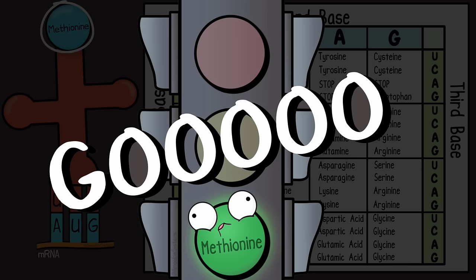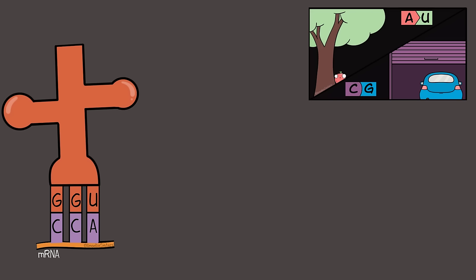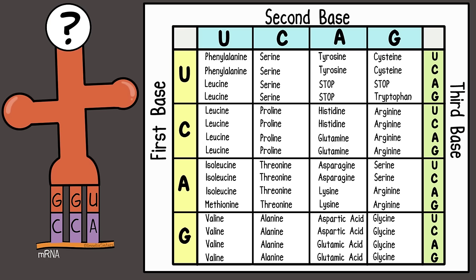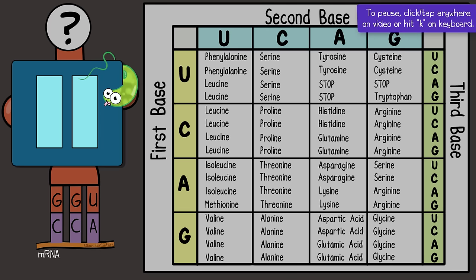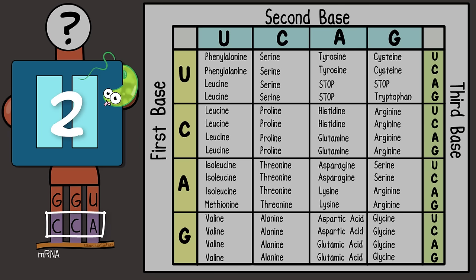Fun fact: methionine is commonly the starting amino acid for many polypeptide chains, as AUG is a start codon. Next codon is CCA. That means the anticodon for the tRNA will be GGU. Now what amino acid will that tRNA carry? Time to use the codon chart. We're going to ask you to pause the video while you try to determine which amino acid this tRNA would be carrying. Don't forget to use the mRNA codon, not the tRNA anticodon.